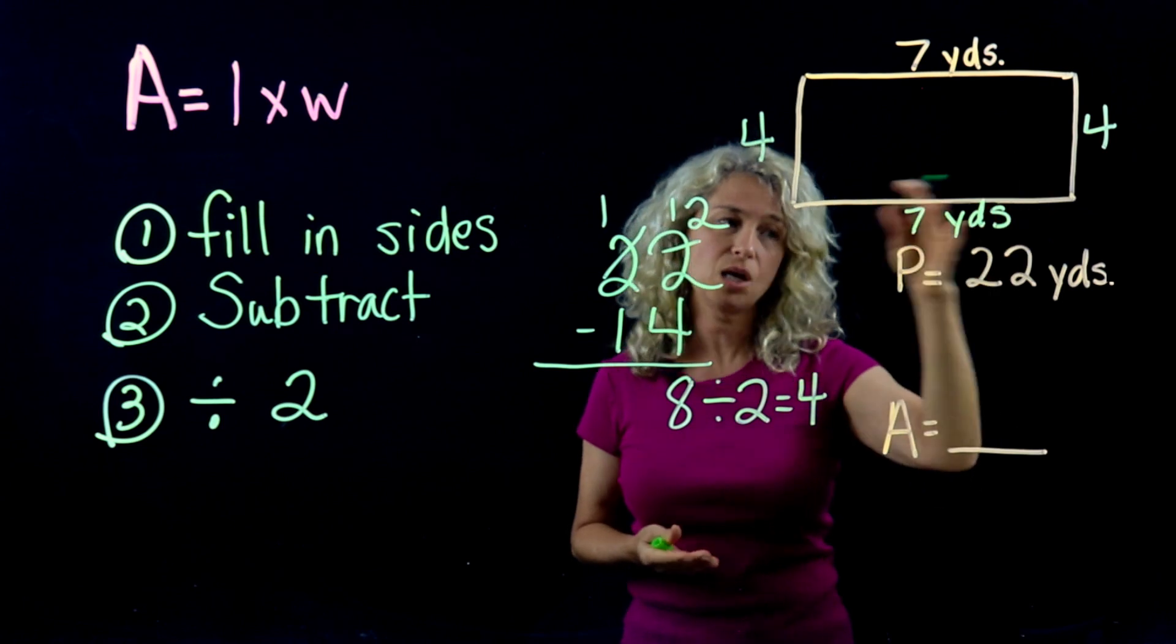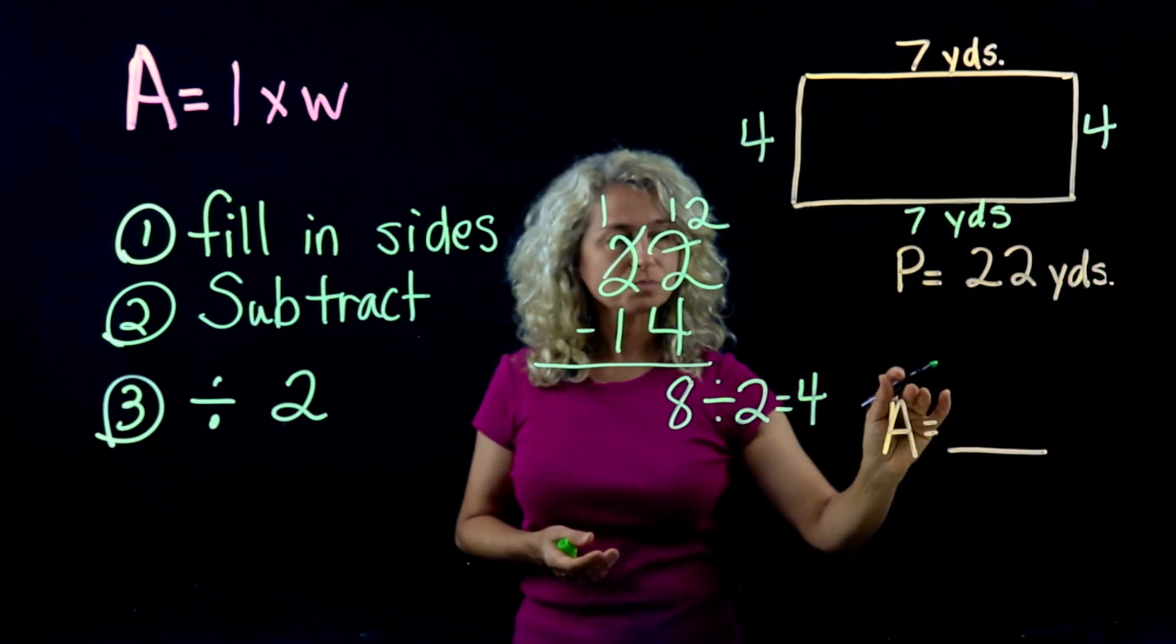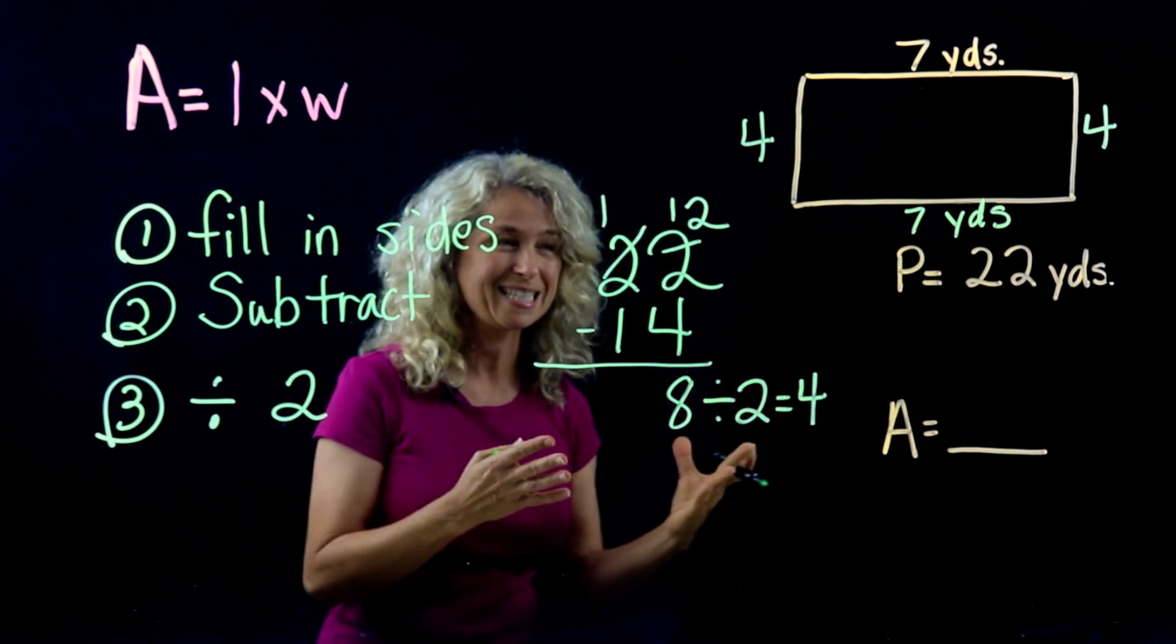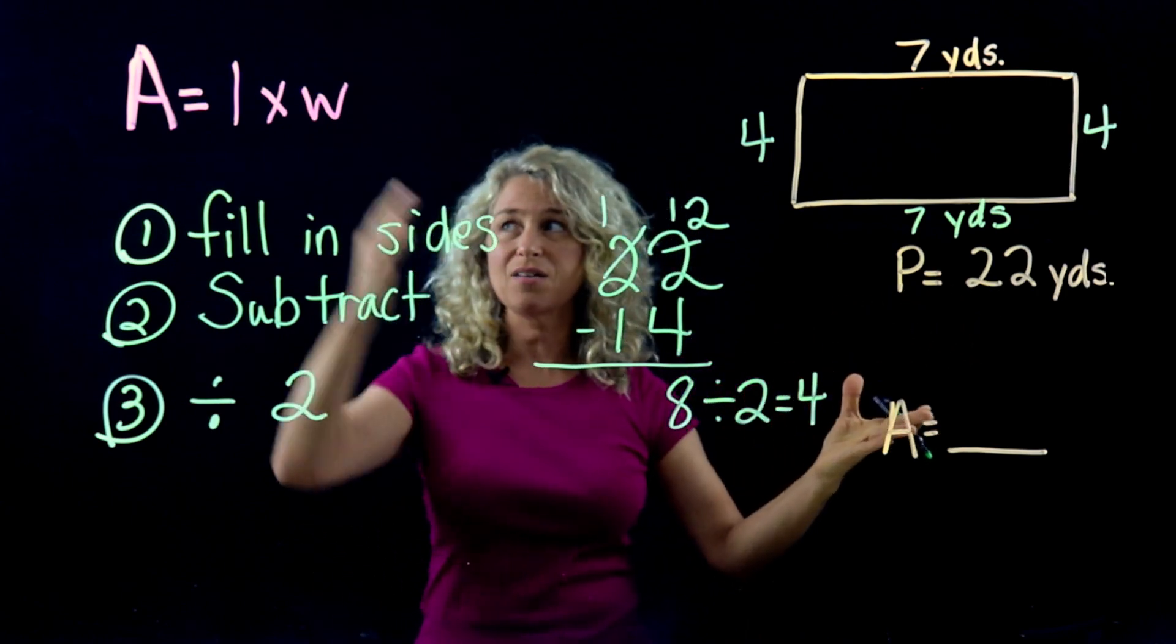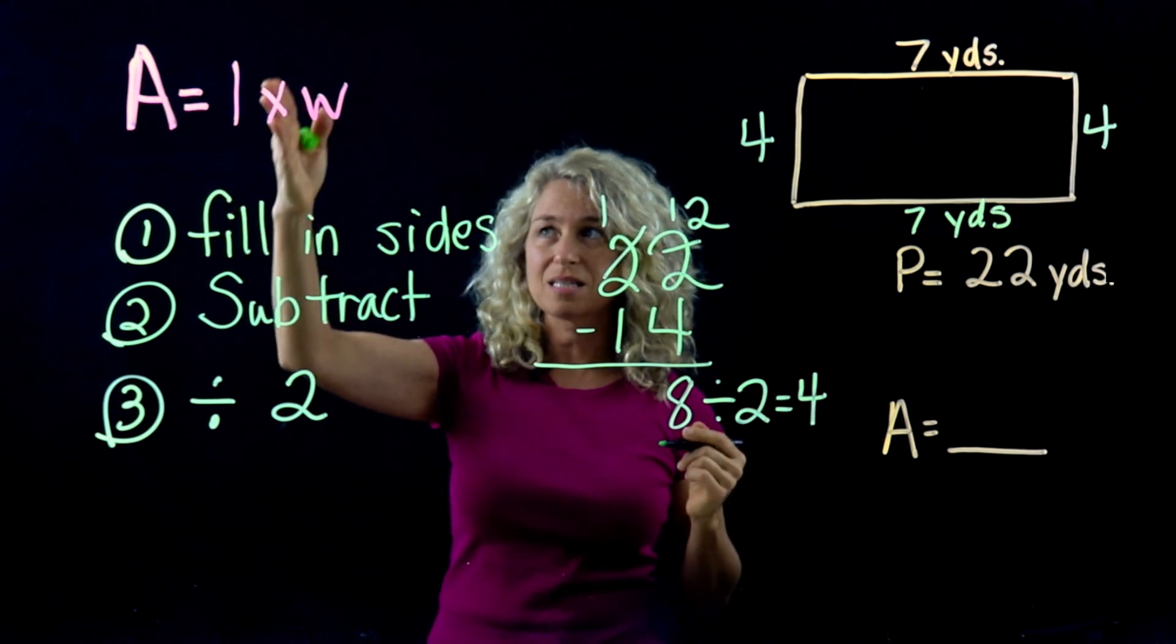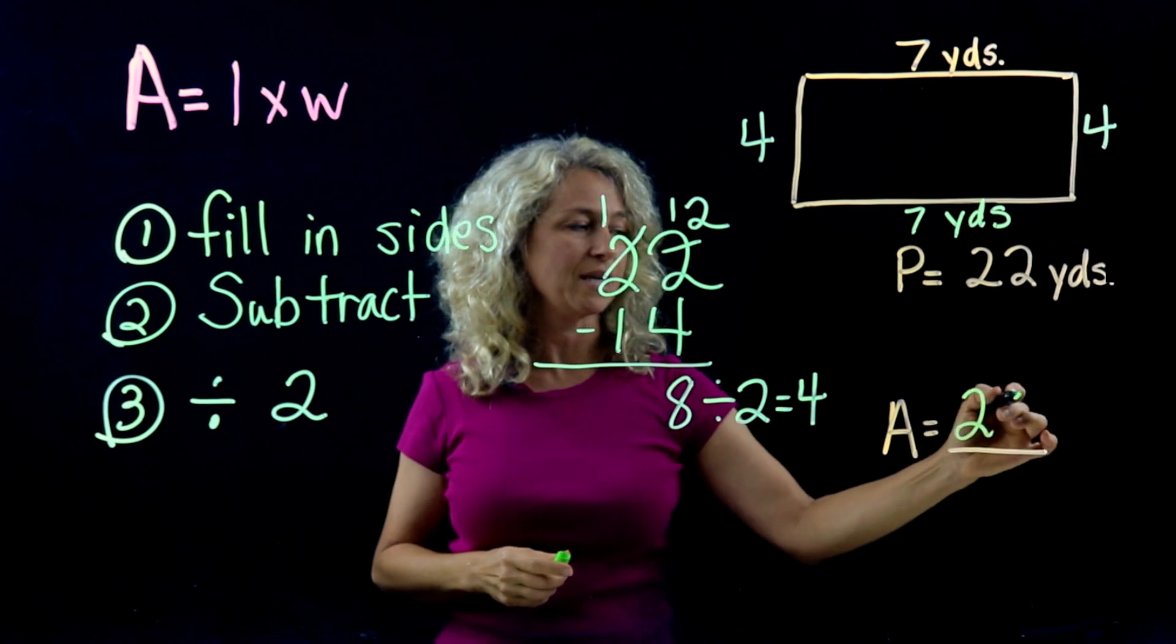All right, so once you get to this stage, you can fill out the area because all you need for area, remember, is length times width. 7 times 4 is 28. Don't forget yards squared.